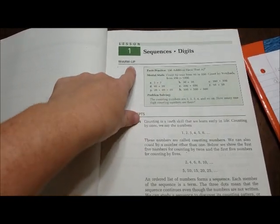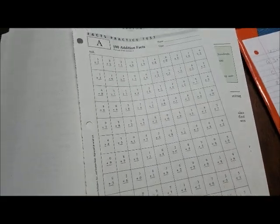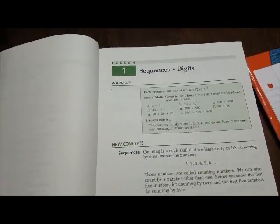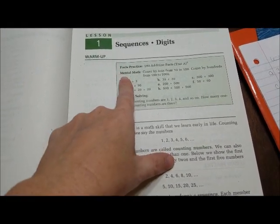Alright, so it starts with the 100 addition timesheet, which is this, and Bailey will do in just a minute. And then over here, it starts with mental math.